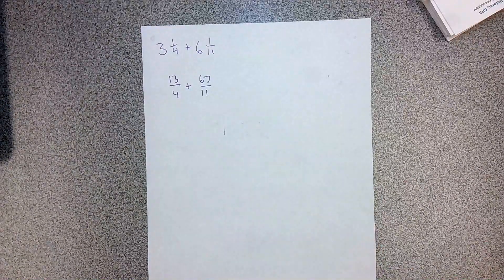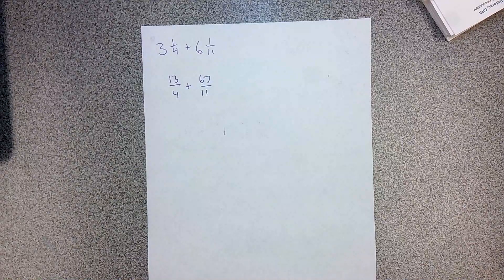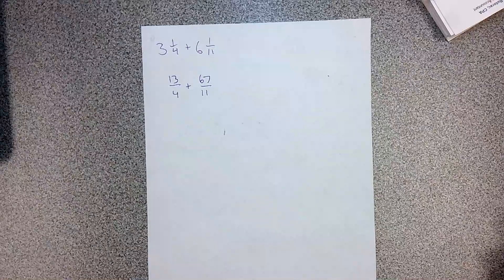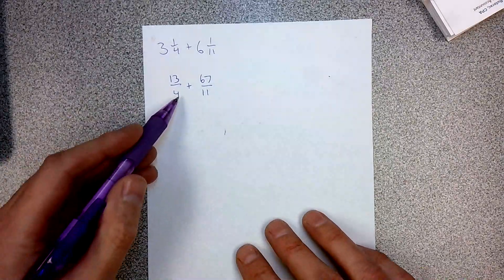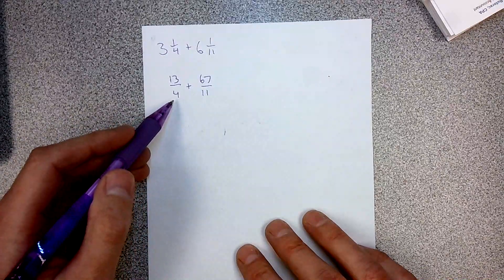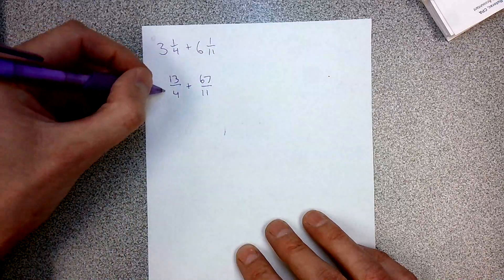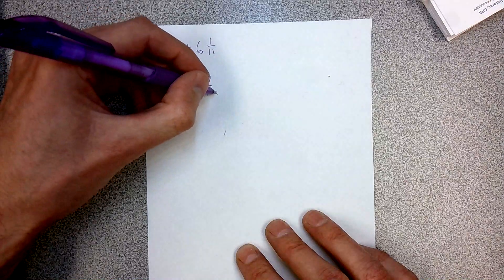This isn't any better or worse. It's the same amount of work. I'm still going to have to get common denominators. I'm still changing it to an improper fraction. I'm just doing it a different way. And you can decide which way you like better. I need a common denominator. I think the lowest common denominator, the least common denominator between these two, would be 44. So I'm going to do 4 times 11, and I'm going to do 11 times 4.